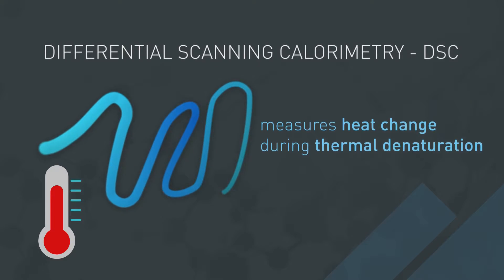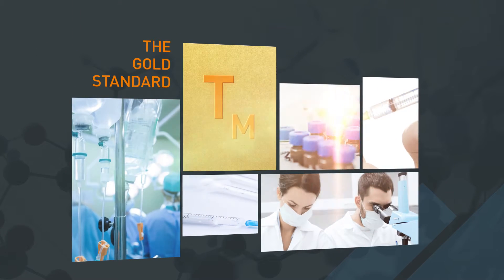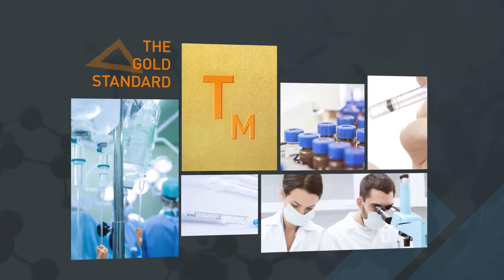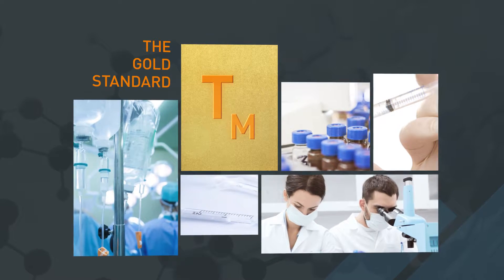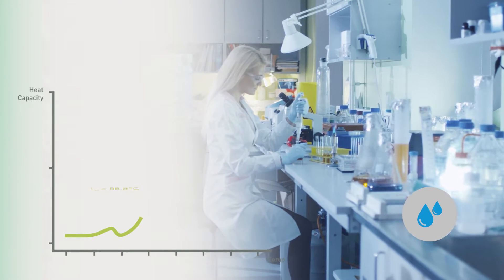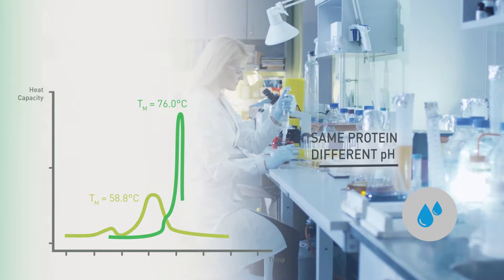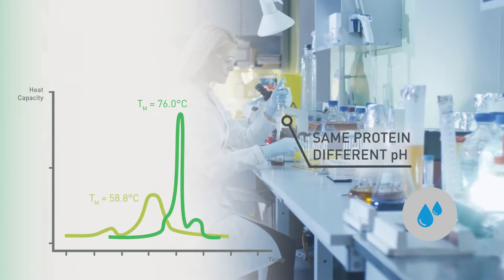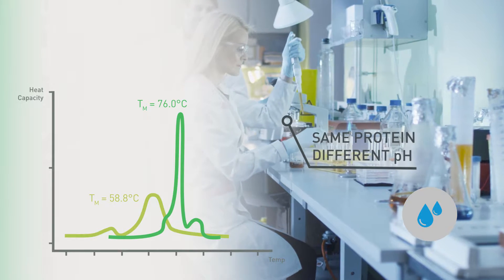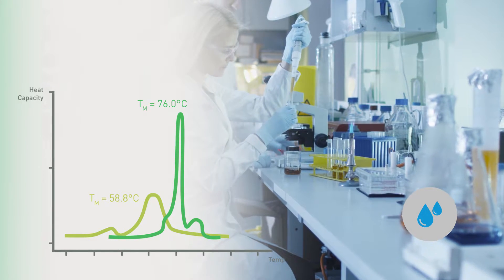DSC is universally considered the gold standard for measuring the Tm of proteins in solution. It quickly and accurately measures the Tms of the same protein in different formulations or buffers. The rapid determination of the formulations with the highest Tm from DSC indicates the formulations that need progressing through the development pipeline.